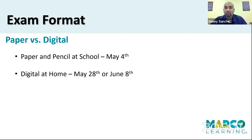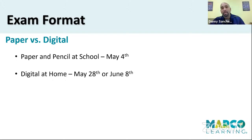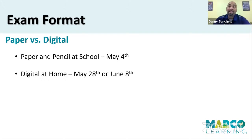The paper and pencil exam at school is May 4th at 12 PM Eastern time, which every other time zone has to adjust off of that. The digital at-home test is May 28th or June 8th — there are two separate dates for that. For those of you who do have a choice, I am strongly team paper and pencil. There are many reasons why, which I'll get into when I talk about the actual structure of the exam.